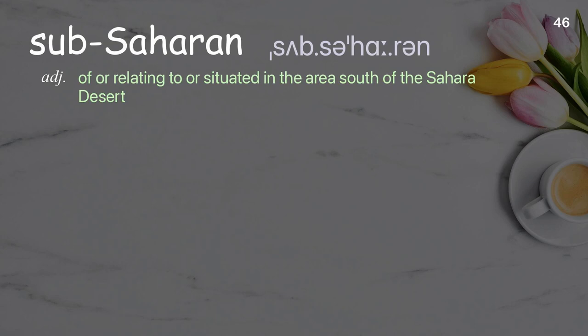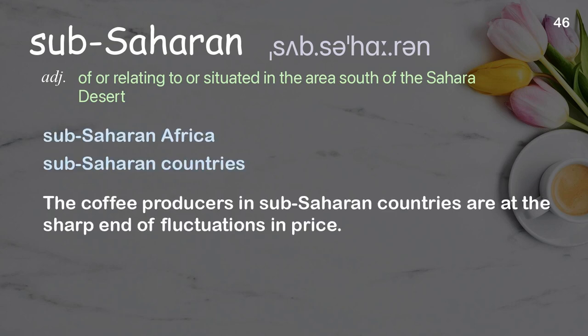Sub-Saharan: of or relating to or situated in the area south of the Sahara Desert. Examples: Sub-Saharan Africa, Sub-Saharan countries. The coffee producers in sub-Saharan countries are at the sharp end of fluctuations in price.